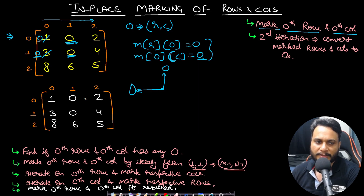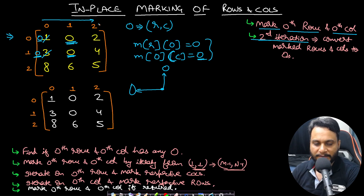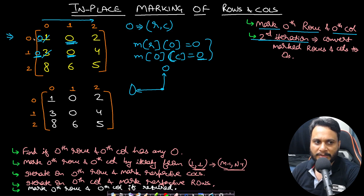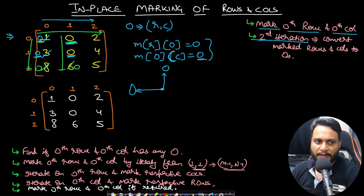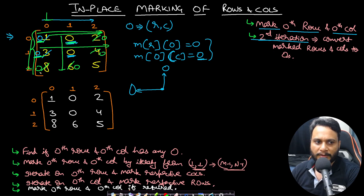After this marking pass, you do a second iteration: wherever the zeroth row or zeroth column has a zero, you mark the entire corresponding column or row as zero. You only need to check the zeroth row and zeroth column entries. However, applying this naively converts everything to zero — that's a wrong answer.